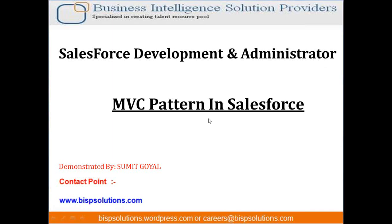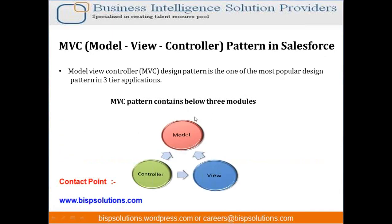MVC stands for Model, View, and Controller — M for Model, C for Controller, and V stands for View Pages. It is one of the most popular design patterns in a 3-tier architecture. It has three modules: model, view, and controller.